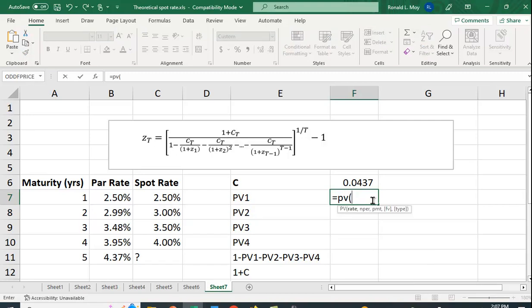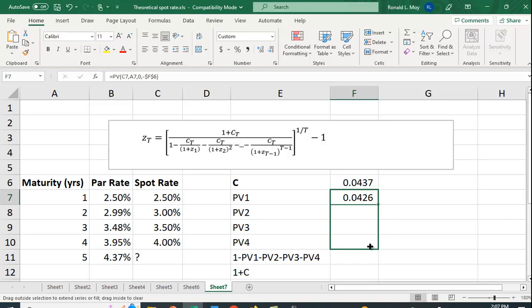What's the present value of this? Let's use the PV function. The rate we want is the spot rate for that period. The number of periods is going to be here. There is no payment, and we want it to be a negative number here because we want it to come out as a positive number, and I'm going to hit F4 to lock that. I should be able to copy this down.